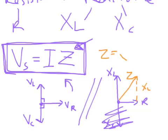So Z equals R squared plus XL squared. Square root. Square root of the whole lot to get Z.